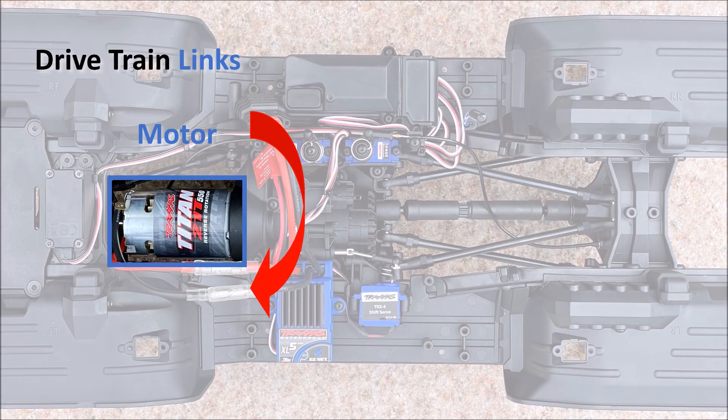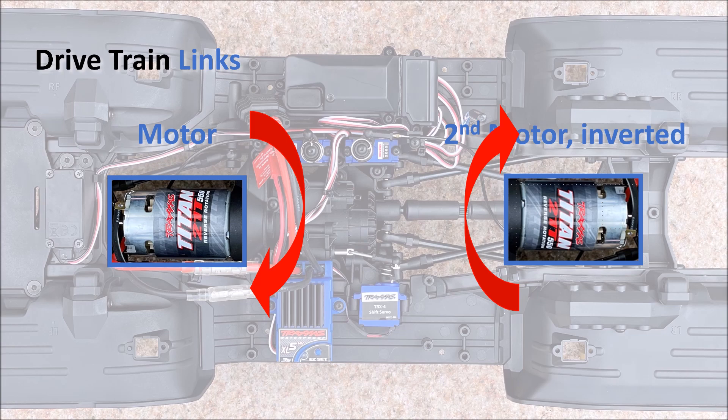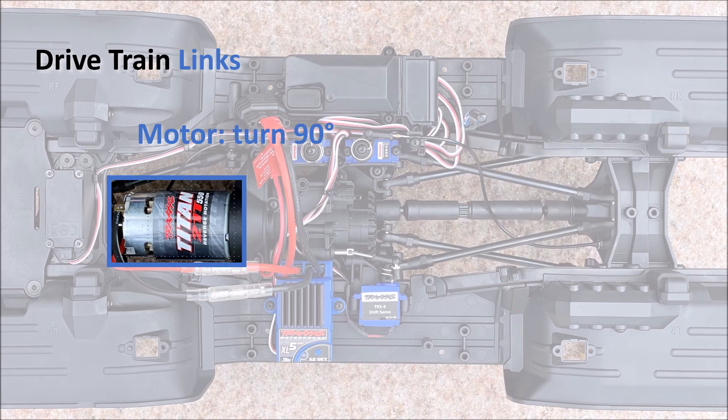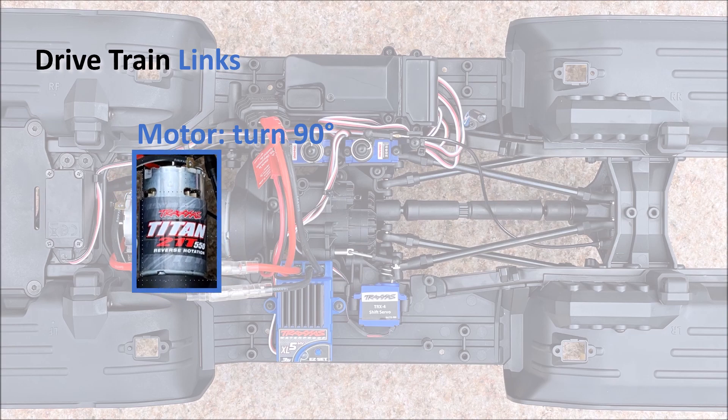For example, a second motor could be inserted that rotates into opposite direction to cancel out the large momentum of the accelerating motor. Or the motor could be turned so that the axis is perpendicular to the drive direction.